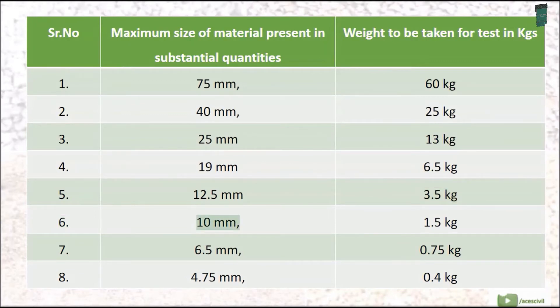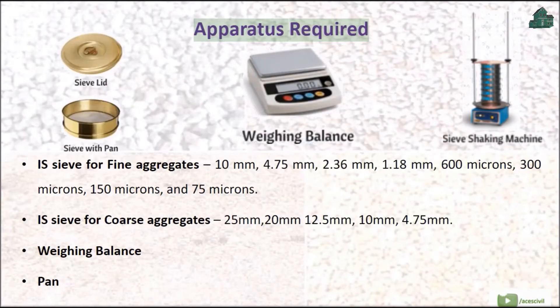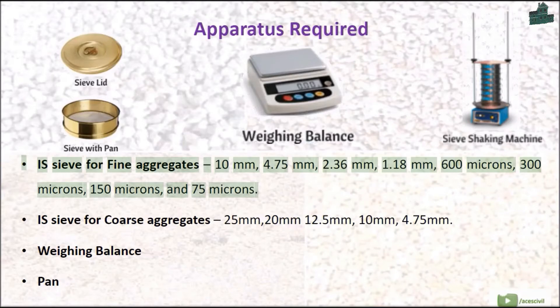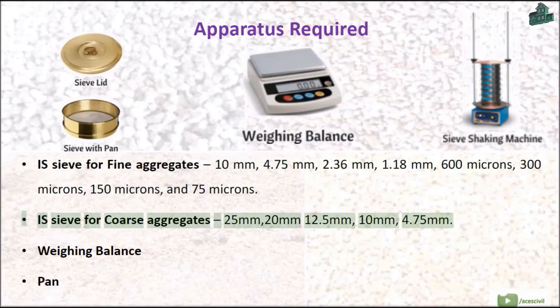Apparatus Required: IS sieve for fine aggregates: 10 mm, 4.75 mm, 2.36 mm, 1.18 mm, 600 microns, 300 microns, 150 microns, and 75 microns.